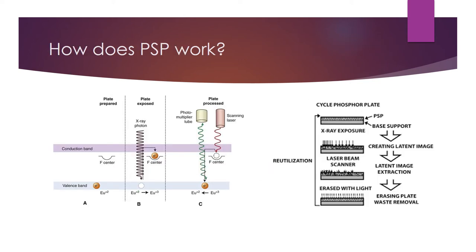When it comes to PSP, the technology is quite advanced and the image is formed in multiple phases. First the plate is prepared, it gets exposed to radiation, then it goes into the scanner, gets processed, and finally you see an image. As a student you don't really need to know all of this in detail — it's just to give you an idea.